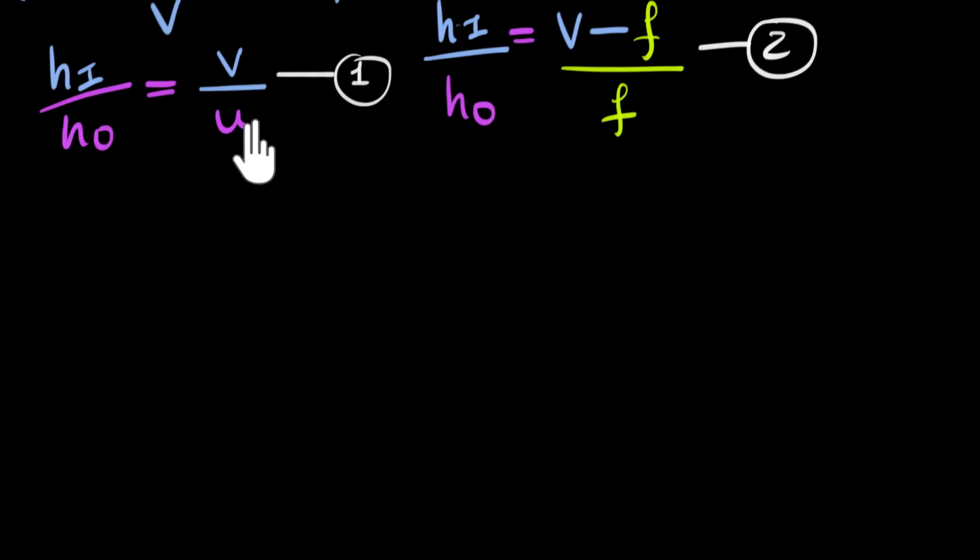So since the left-hand side is equal, we could say the right-hand sides are also equal to each other. And therefore, we could now say that V divided by U has to be equal to V minus F, V minus F divided by F.